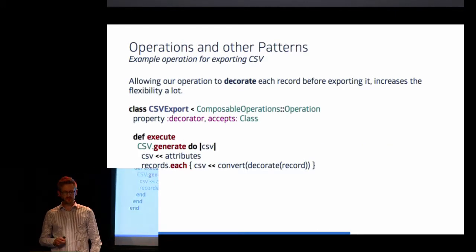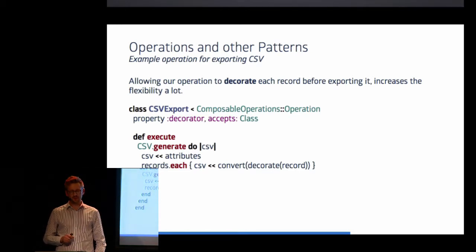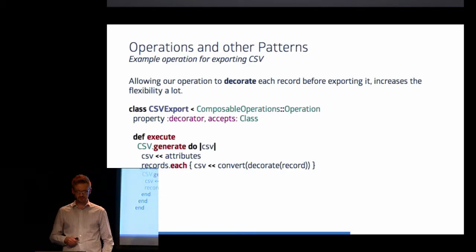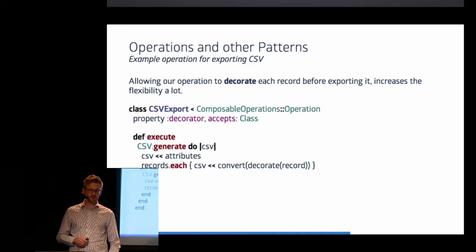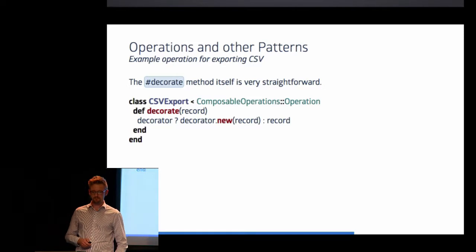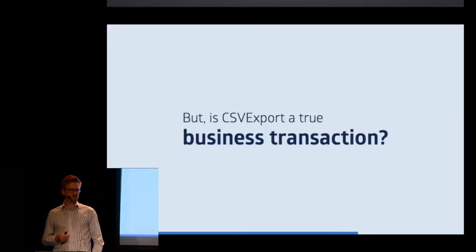CSV export as it is now is not very flexible because we assume that any attribute we want to export is actually implemented by our model object. But maybe we want to have additional columns or we want to map columns to different names. Well, an easy approach to solve this would be to utilize a decorator pattern. And I've done precisely this for this example. Now, before we convert a record into an array representation, we simply decorate it. And decorate is implemented unobtrusively. If no decorator has been specified, we simply return the record. Otherwise, we wrap the record with this decorator.